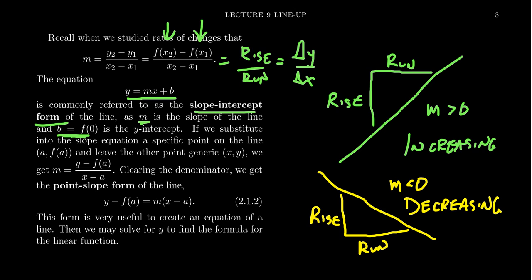Those are important things to be aware of as you're graphing linear functions. When you know these principles — always increasing or always decreasing, never concave up, never curving down — you just draw straight lines. A strategy many people use is: if you know the slope and the y-intercept, plot the y-intercept first at the point (0, b), then go up by the rise and over by the run to find another point, and connect the dots. That gives you your linear function.